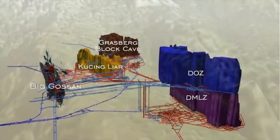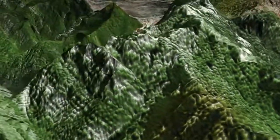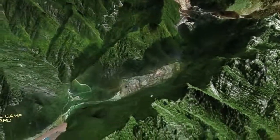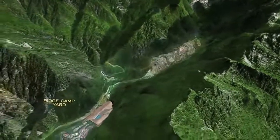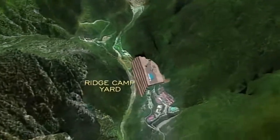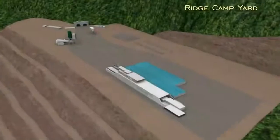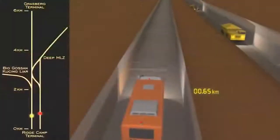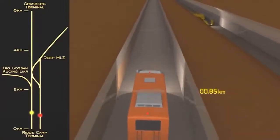Development of the underground resources began years ago, with the development of the AB Addits to access these massive ore bodies. Our journey from the surface to the Grasberg underground ore body begins at Ridge Camp Yard, where we enter the AB Addits and travel to the Grasberg terminal. You can follow our progress with the map on the left.